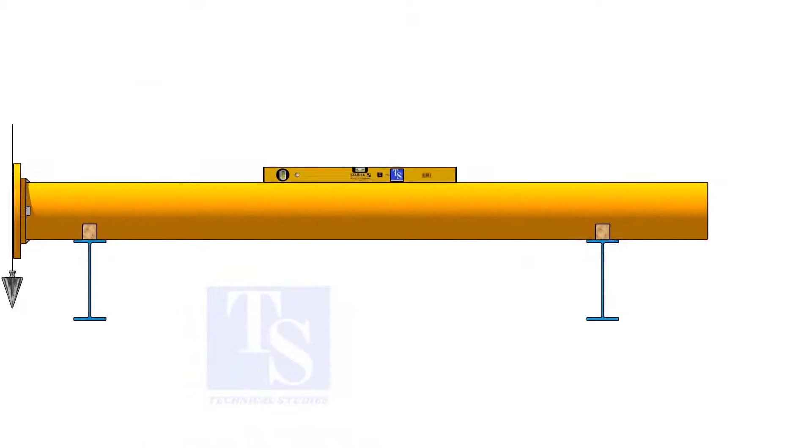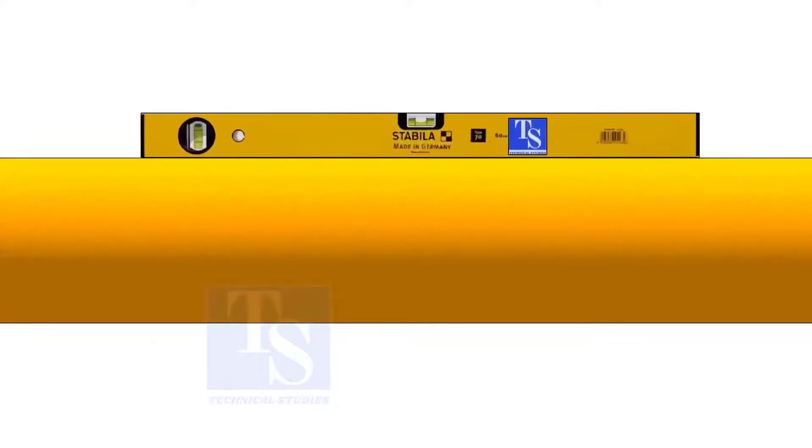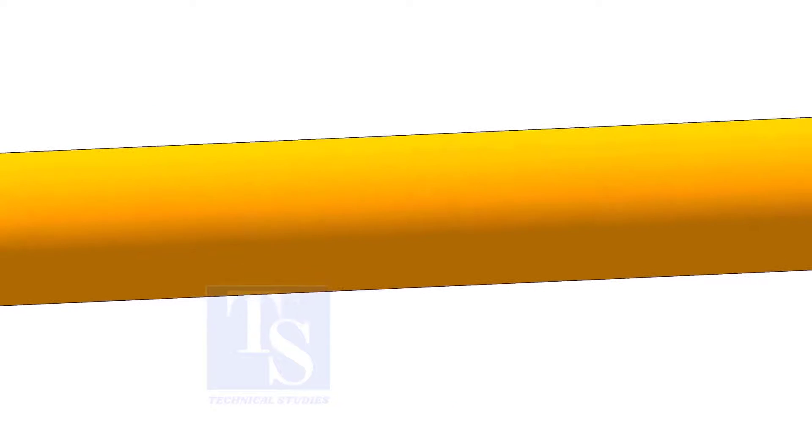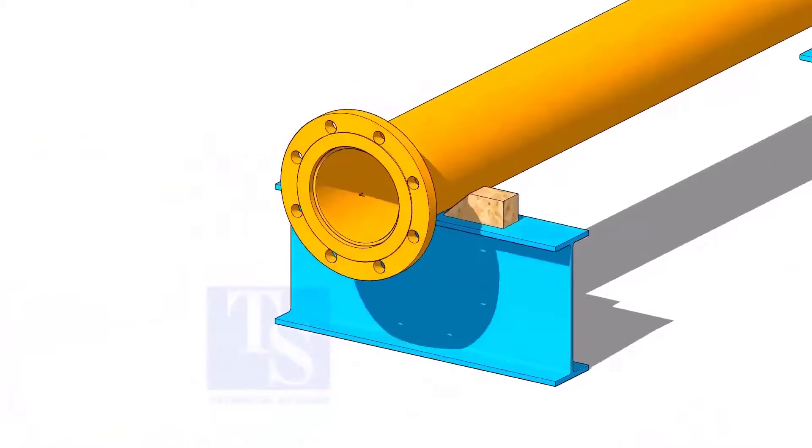Now, correct the level of the pipe. Correct the plumbness of the flange. Tighten the packing on both sides of the pipe.